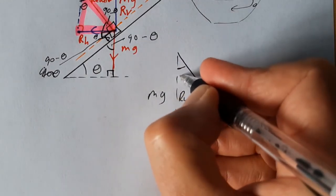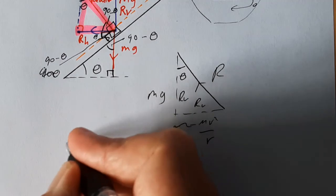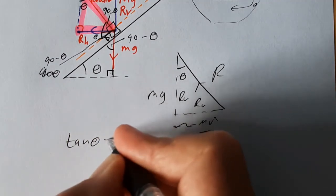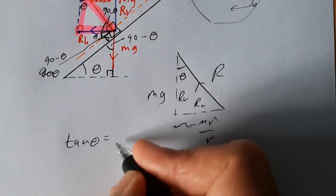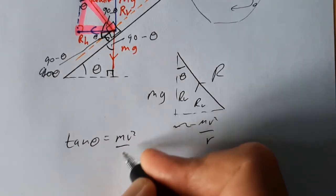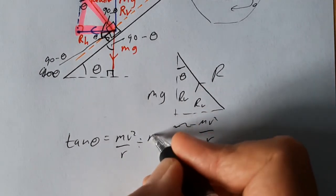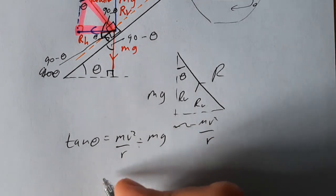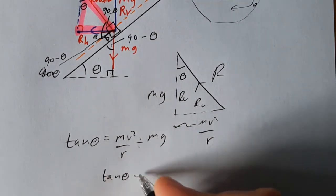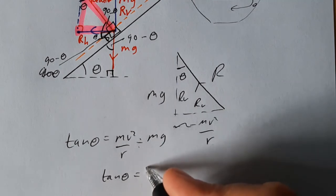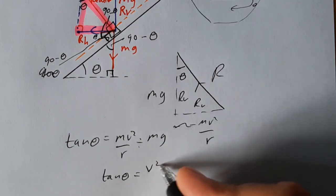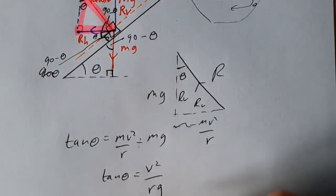And we now know that that angle there is theta. So tan theta is equal to the opposite, which is mv squared over r, divided by the adjacent, which is mg. The m's will cancel and you get tan theta is equal to v squared over rg.